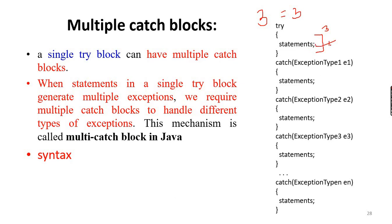We see exception type 1 in a step. Exception type 1 is handled, and exception type 2 is also handled. The name of this block is called the multiple catch block.